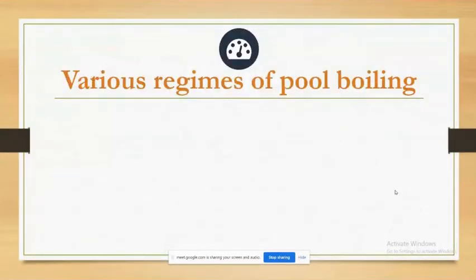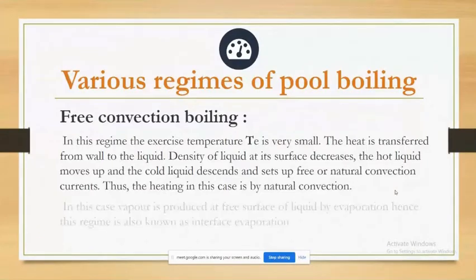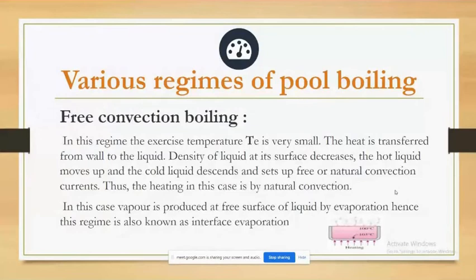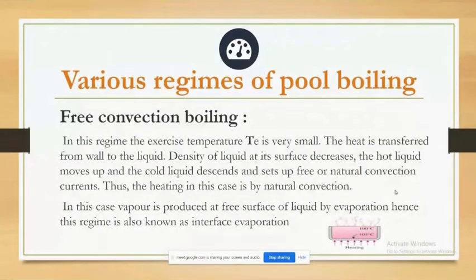There are various regimes of pool boiling. Free convection boiling — in this regime the excess temperature ΔT_e is very small. Heat is transferred from the wall to the liquid; the density of liquid at its surface decreases, the hot liquid moves up and cold liquid descends, setting up free or natural convection currents. In this case vapor is produced at the free surface of the liquid by evaporation, hence this regime is also known as interface evaporation.